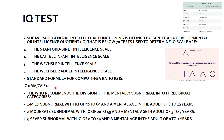If IQ is above 130, it is considered very superior. Einstein's IQ was above 140, considered a gifted genius. WHO recommended dividing the mentally subnormal into three groups: mild (IQ 50–69), moderate (IQ 20–49), and severe (IQ 0–19).